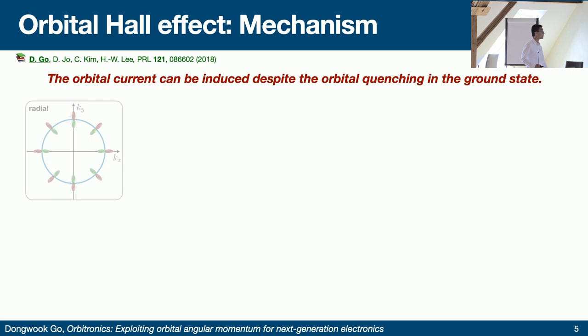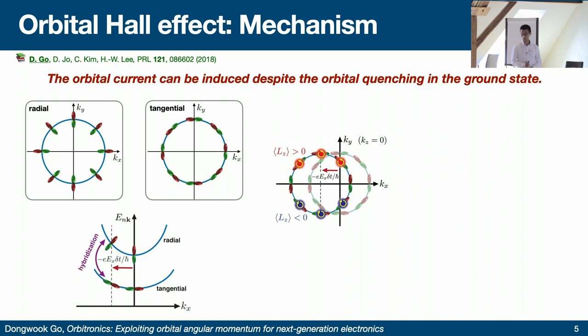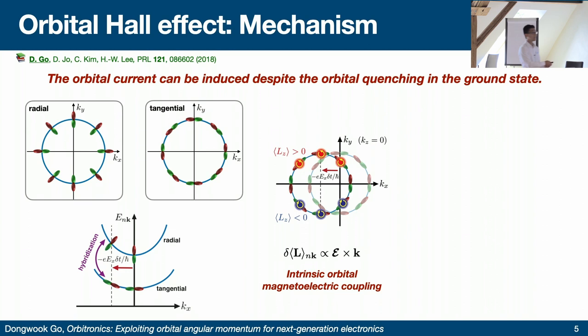Question from audience: Is this a linear response, or do you need two electric fields for creation and transformation? Answer: This is only a linear response. The induced orbital angular momentum is linearly proportional to the electric field. States here naturally move in the y-direction even at the ground state, while states on the other side move in the minus-y direction — so they flow in a dissipationless manner. This is not transport by excitation; it is transport already present in the electronic band structure.